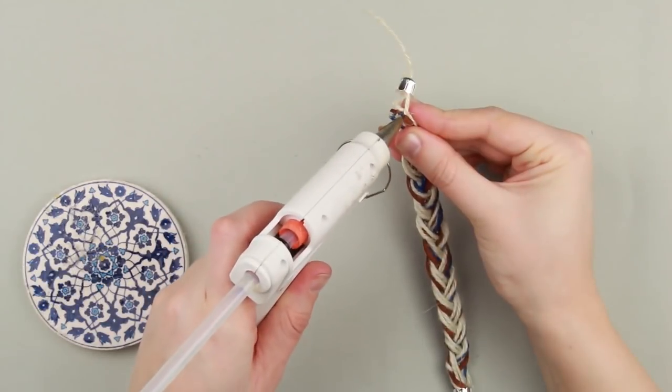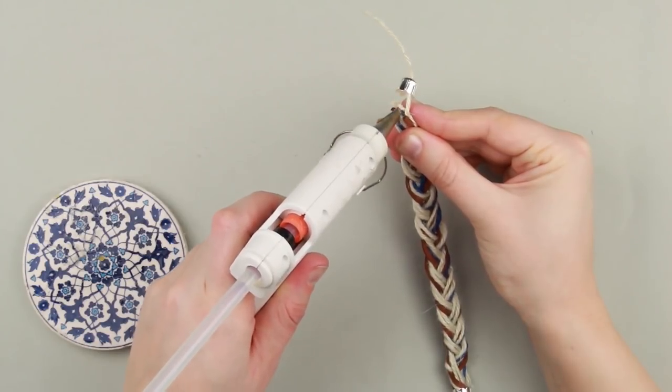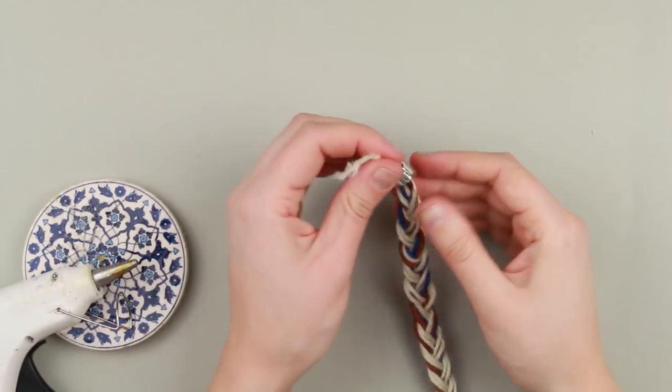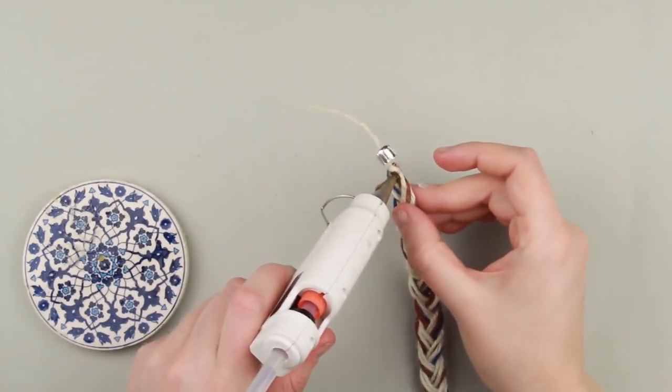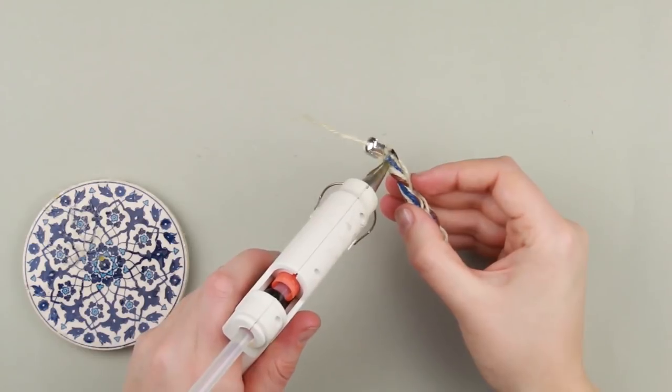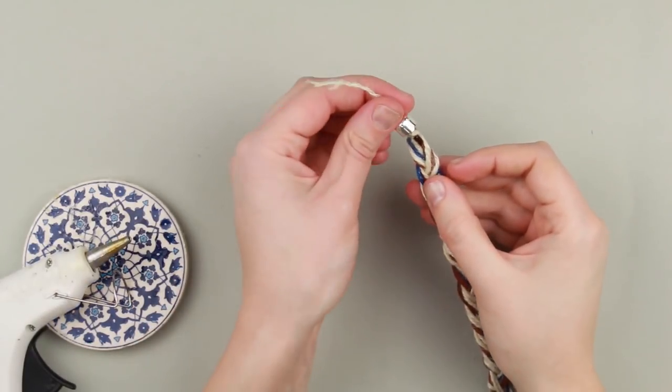Hot glue the braid ends. Press over. Add some more glue and fasten the cap.